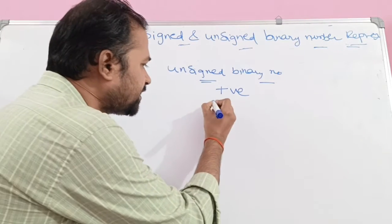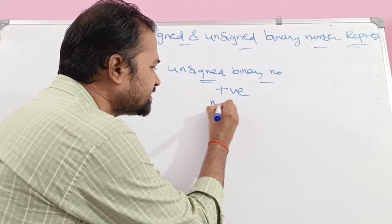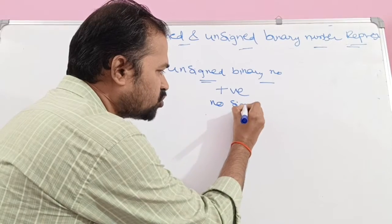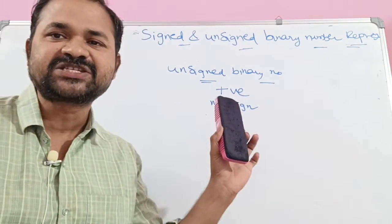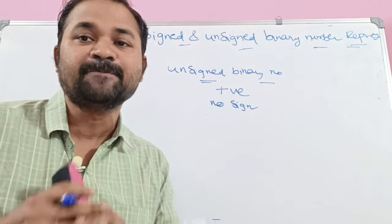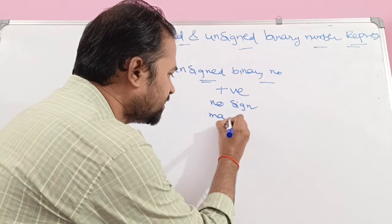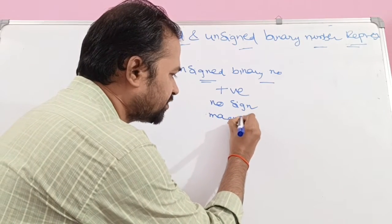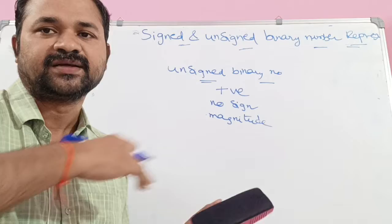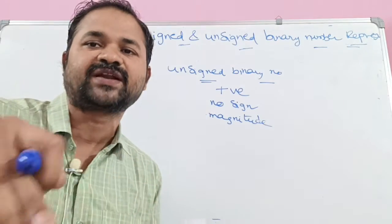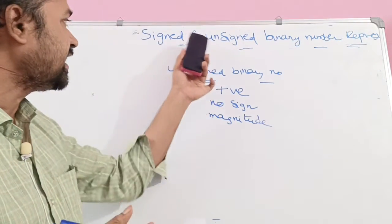Because unsigned means no sign, if there is no sign, then the default sign is positive. Unsigned binary numbers don't have any sign bit — no sign bit. They contain only magnitude, which means the bits represent the corresponding number.